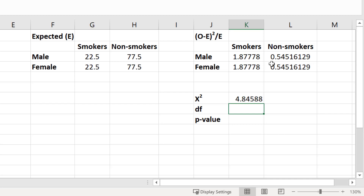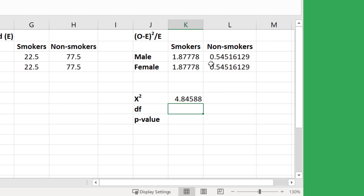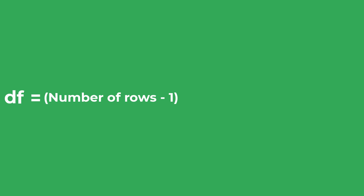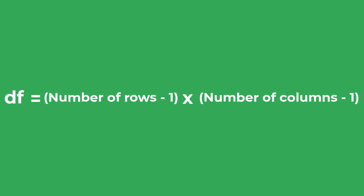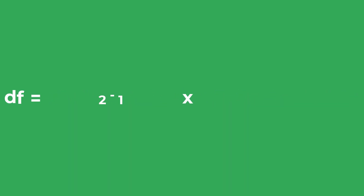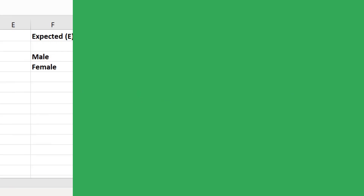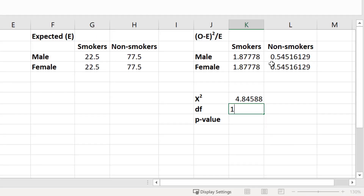Next we need to calculate the degrees of freedom. This is calculated by subtracting 1 from the number of rows, then multiplying by the number of columns minus 1. In my example this is (2−1) × (2−1), which gives an answer of 1. So I will enter 1 into this cell.